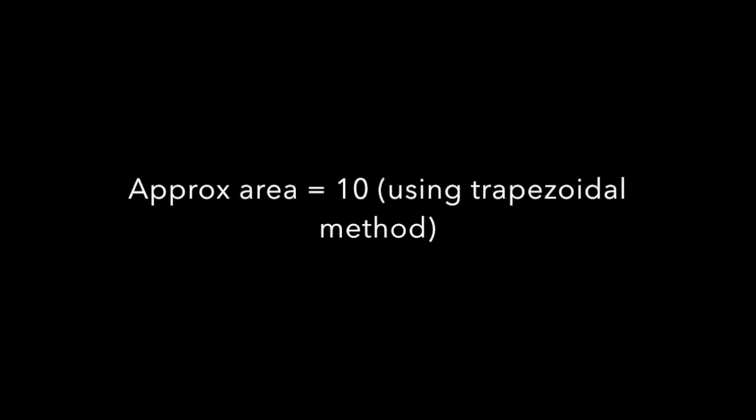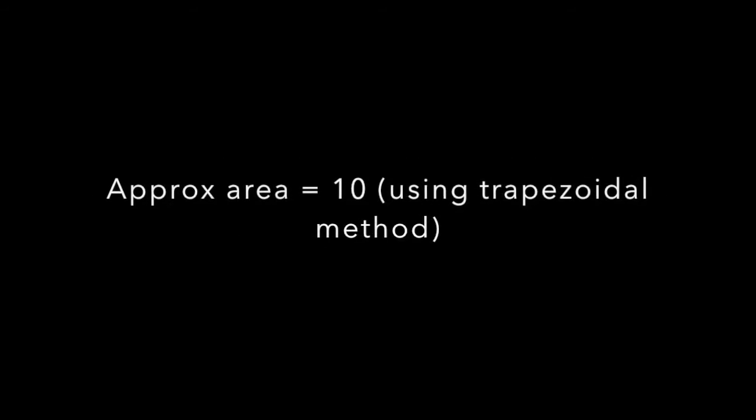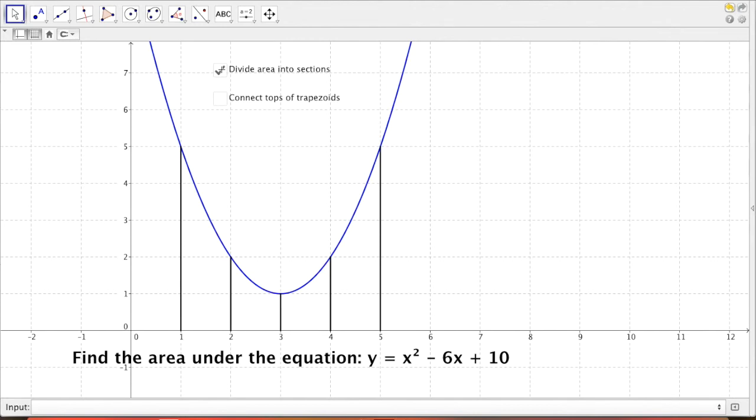And now here are your answers. The approximate area should be 10 for the trapezoidal method. And here's those trapezoids drawn in again. We connect the tops of the trapezoids this time. I hope you can see the red line being above where the blue curve is. The red line is the trapezoid and the blue line is the curve. So we're actually including more area this time, unlike before. So this time it's an over-estimation.